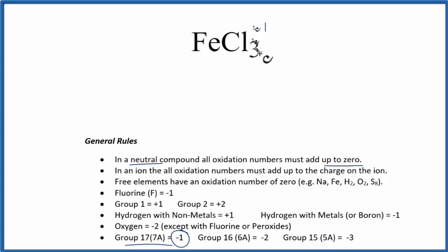So on this side, three times minus one, that's minus three. For this to all add up to zero, plus three. That's the oxidation number on the iron in FeCl3.